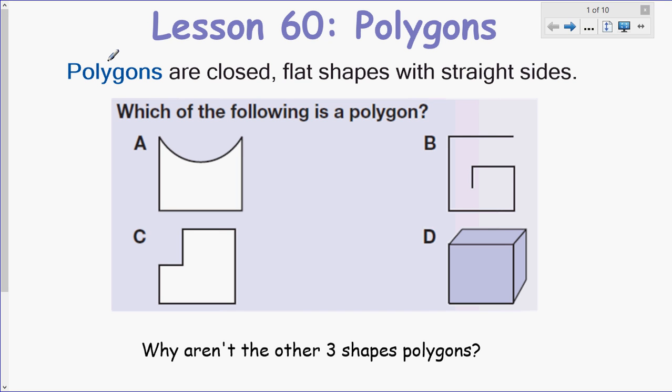Hello, ladies and gentlemen, this is Mrs. Stannis here presenting to you Saxon Lesson 60, which is about our good old friend, the polygon. Please have your notes in front of you and a pencil and put your name on top. We are going to begin by talking about the definition of a polygon. Polygons are closed, flat shapes with straight sides. There's really three criteria they have to have: closed, flat, and have straight sides.